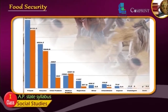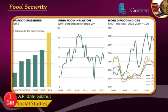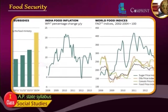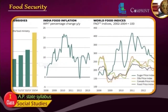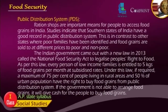The Indian government enacted the National Food Security Act in 2013 to legalize people's right to food. As per this law, every person from low income families is entitled to 5 kg of food grains per month at subsidized rates. A maximum of 75% of people in rural areas and 50% of the urban population have the right to buy food grains from the Public Distribution System. If the government is unable to arrange food grains, it will provide cash for people to buy food grains.